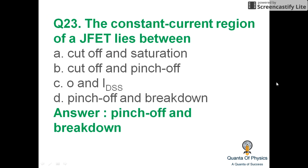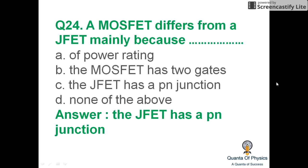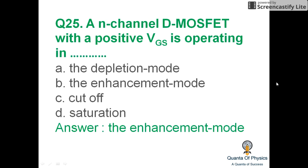The constant current region of a JFET lies between the pinch-off and breakdown regions. A MOSFET differs from a JFET mainly because the JFET has a PN junction while the MOSFET has no junction at all. In an N-channel D-MOSFET, a positive VGS means it is operating in enhancement mode, and a negative VGS means it is operating in depletion mode.